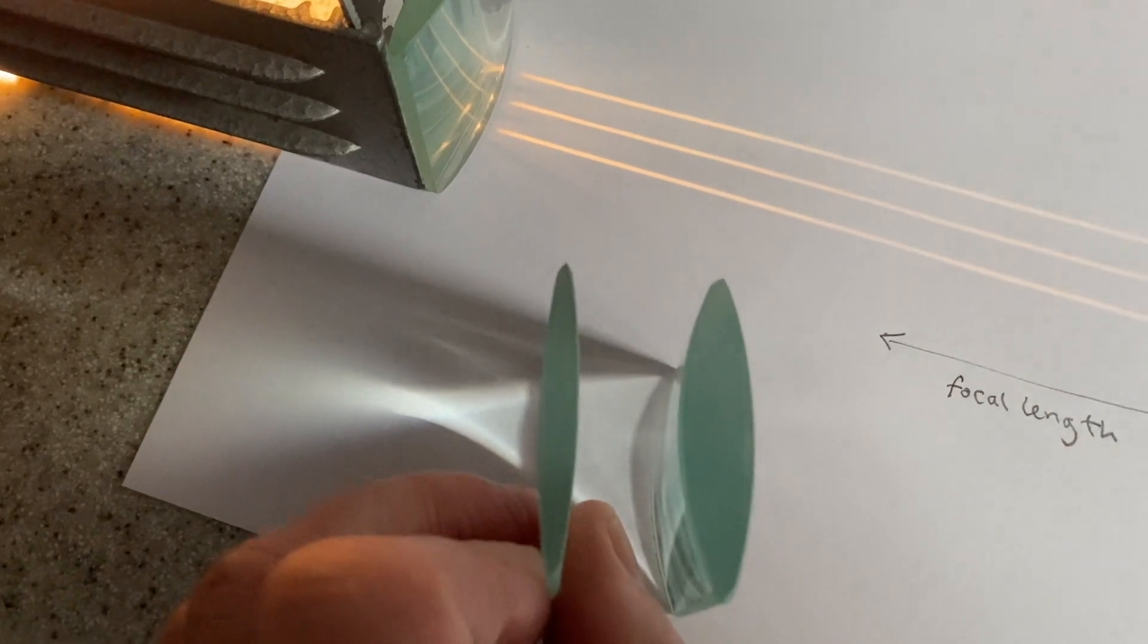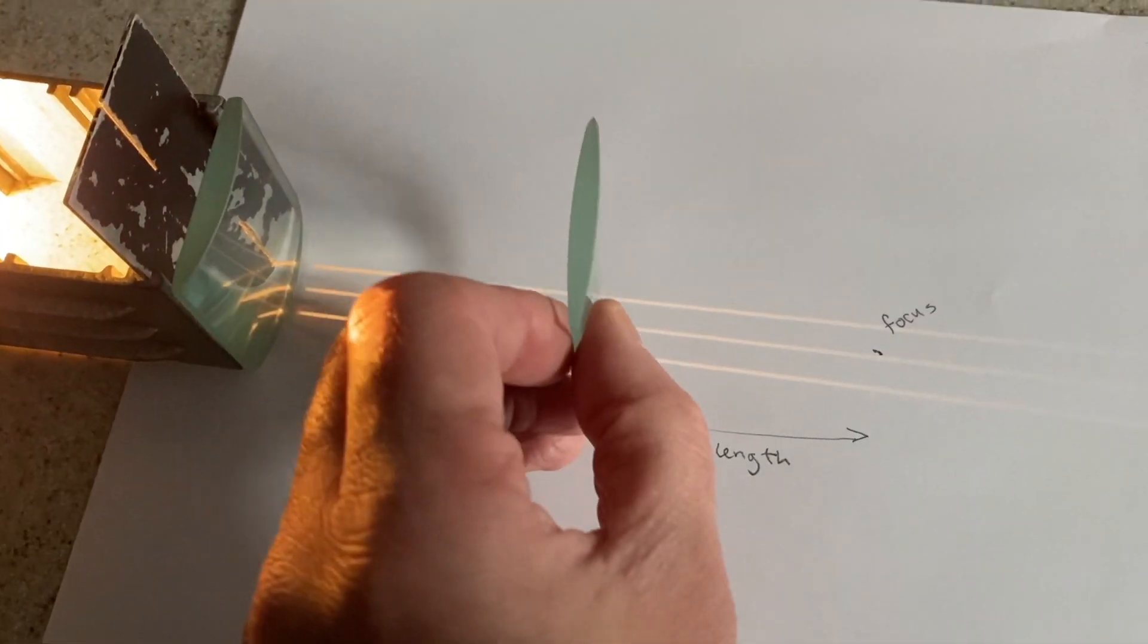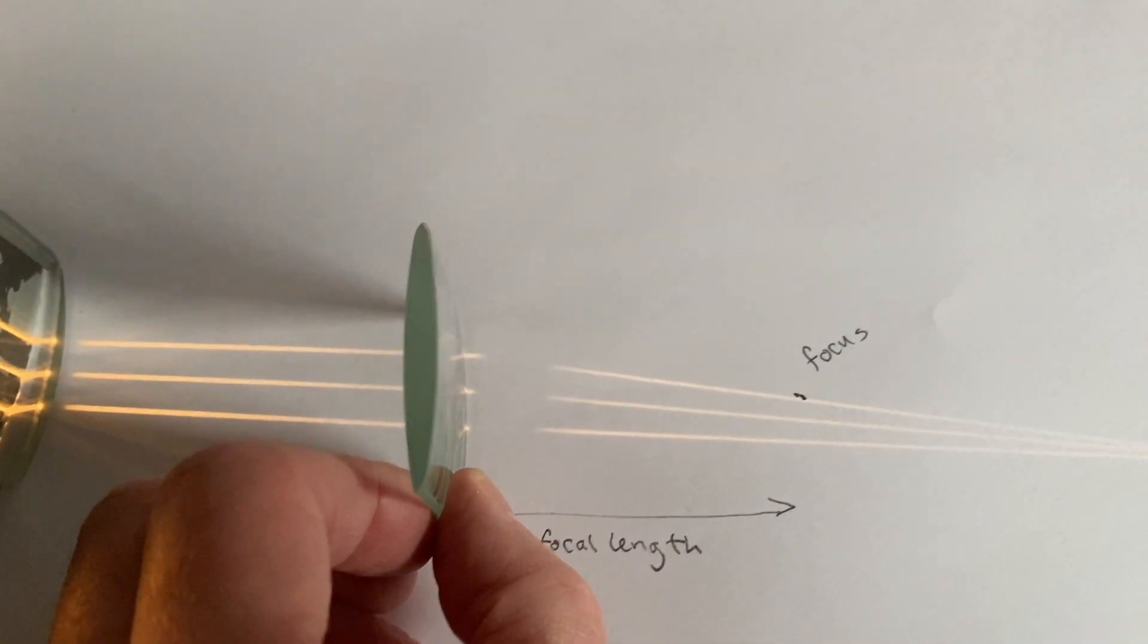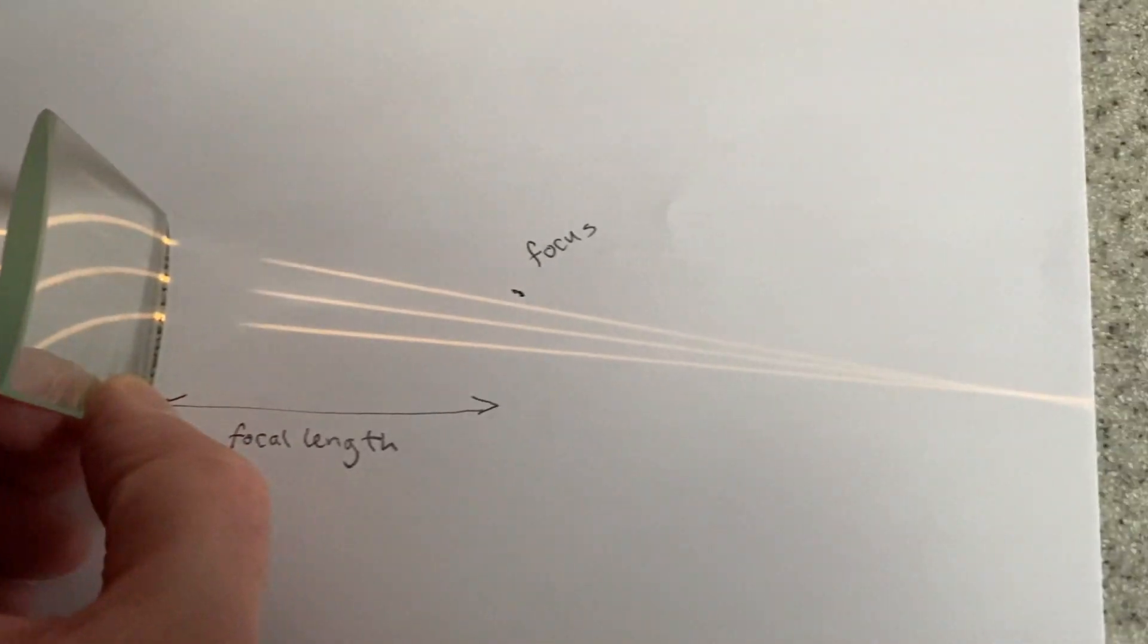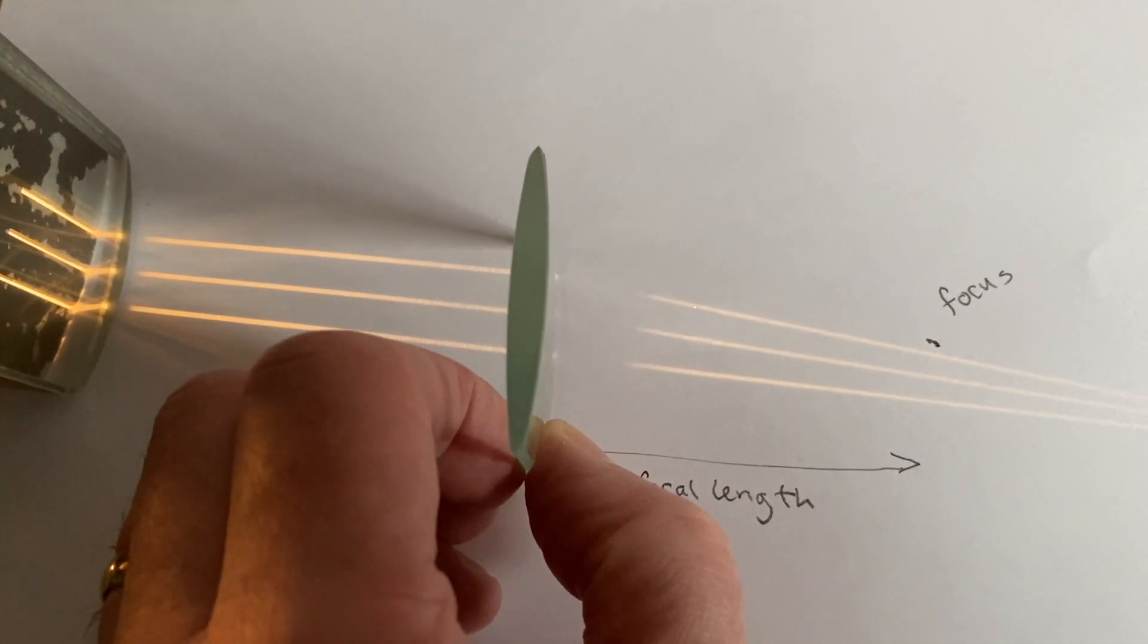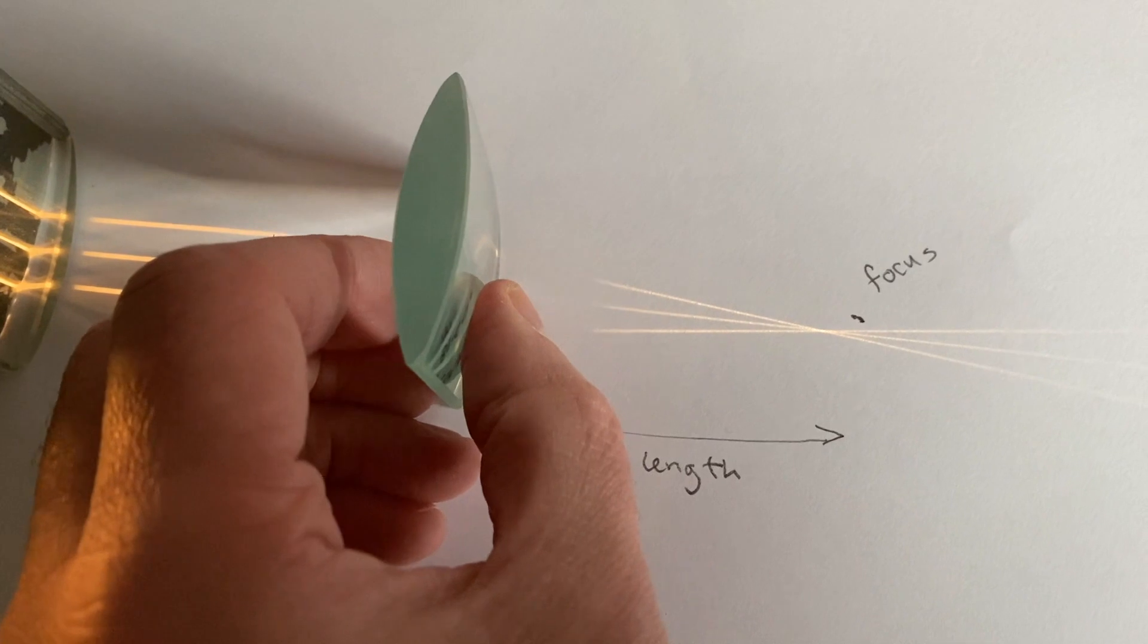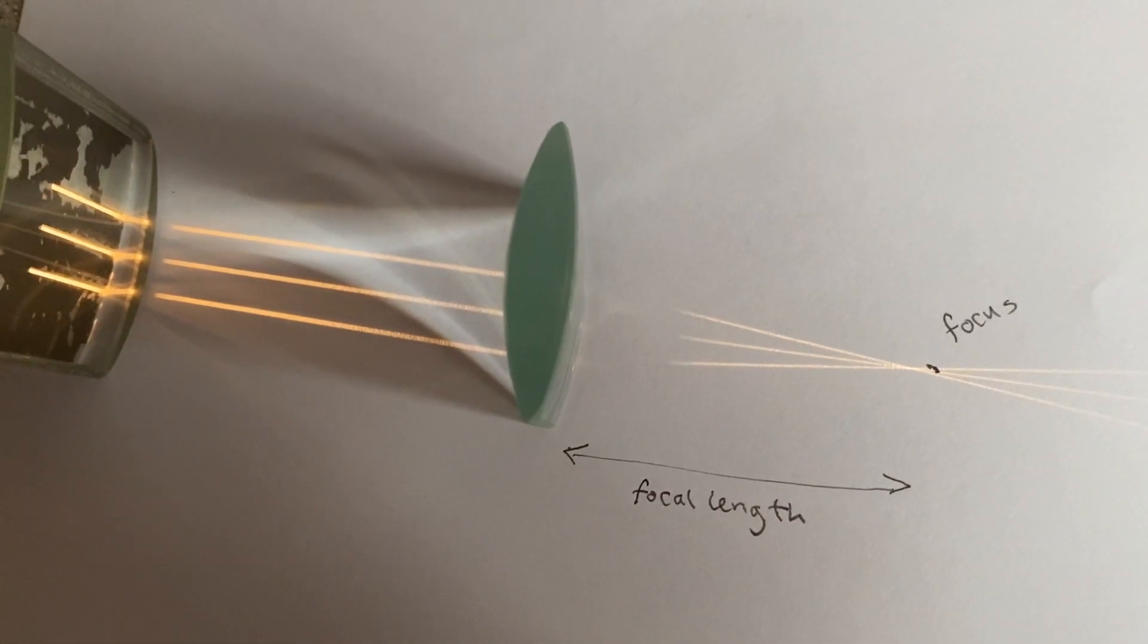If I put it in the same position, the focal length this time is way over at the far end of the paper. So the distance to the focus is much greater with a thin lens. A thicker lens is more powerful. A thicker lens will focus the light in a shorter distance. That's a convex lens.